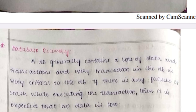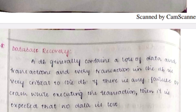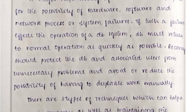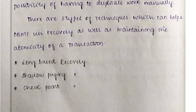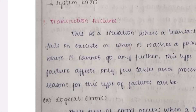The next concept from Unit 4 is database recovery. It is the process of restoring data that has been lost accidentally or deleted — getting the data back is called database recovery. There are three types: log-based recovery, shadow paging recovery, and checkpoint recovery.